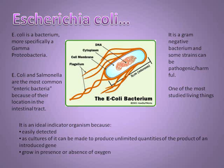E. coli, short for Escherichia coli, is one of the most studied living organisms. It is a bacterium, more specifically a gamma proteobacteria, which means they are gram negative and scientifically important due to their ability to be pathogenic. It is one of the most common enterics due to their rod-shaped, facultative anaerobic metabolism and location in the intestines of animals. Studies have shown E. coli to be an ideal indicator organism because it is easily detected, easily cultured due to its assembly of unlimited quantities of an introduced gene's product, and it can grow in the presence or absence of oxygen.